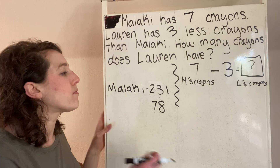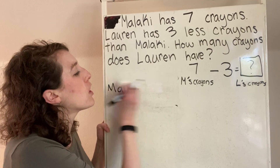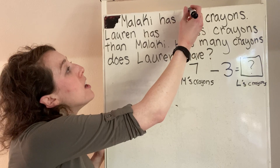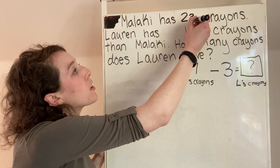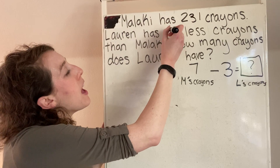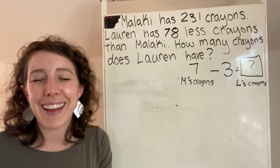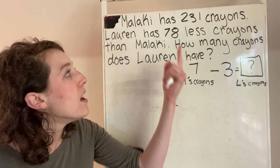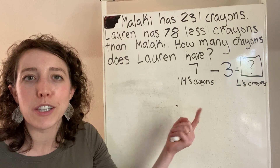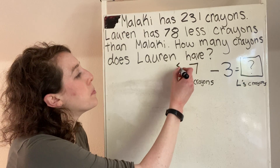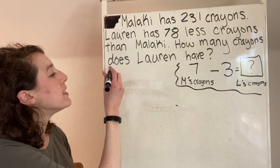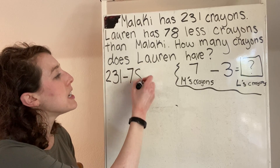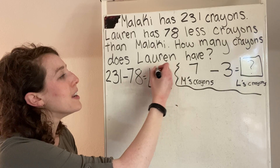Now I'm going to go back and rewrite my original numbers. Originally Malachi had 231 crayons and Lauren has 78 less than Malachi. So I'm still looking for Lauren's crayons, and I'm going to use the same math equation with different numbers. I'll put a little box around this — we are going to be solving 231 minus 78 equals Lauren's crayons.